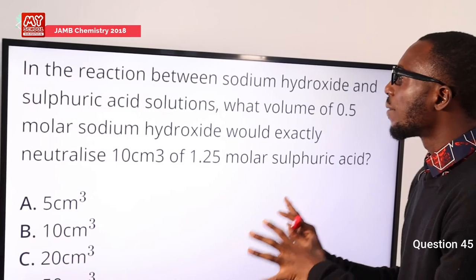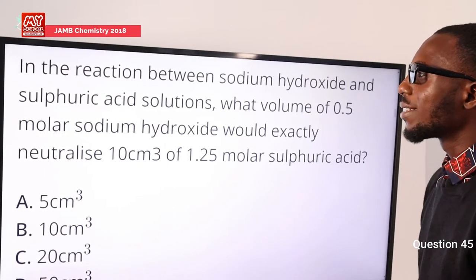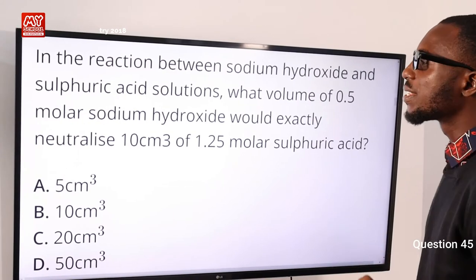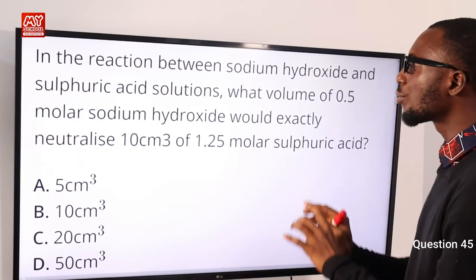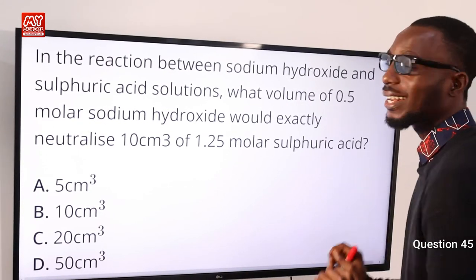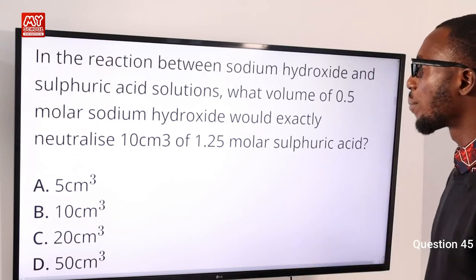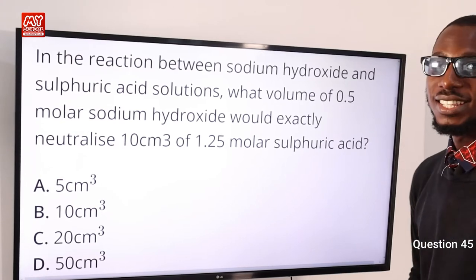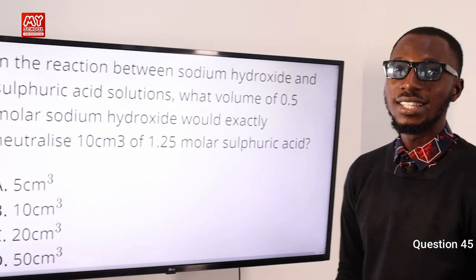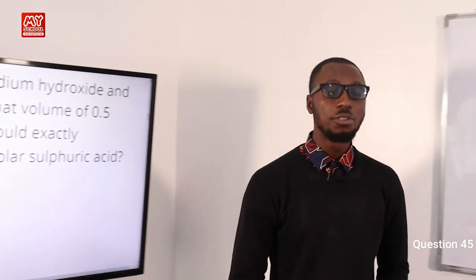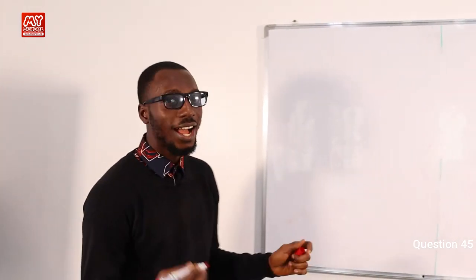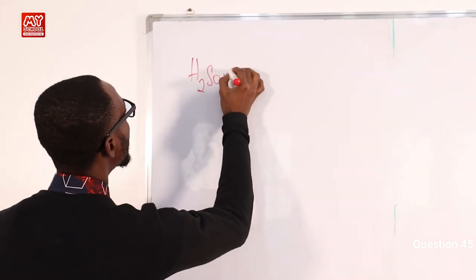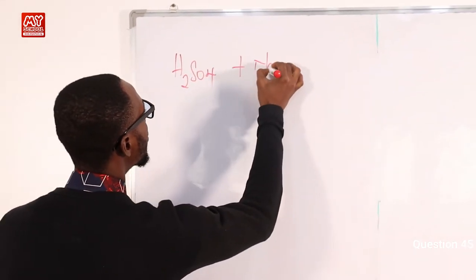In the reaction between sodium hydroxide and sulfuric acid solutions, what volume of 0.5 molar sodium hydroxide would exactly neutralize 10 cm³ of 1.25 molar sulfuric acid? So let's present the equation of the reaction. Sulfuric acid is H₂SO₄ plus sodium hydroxide.